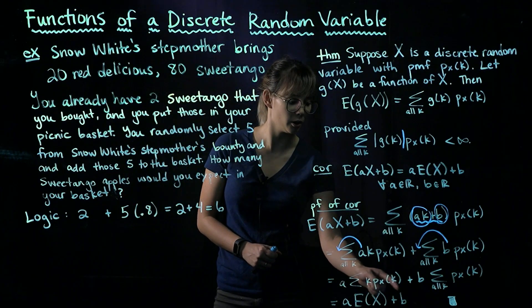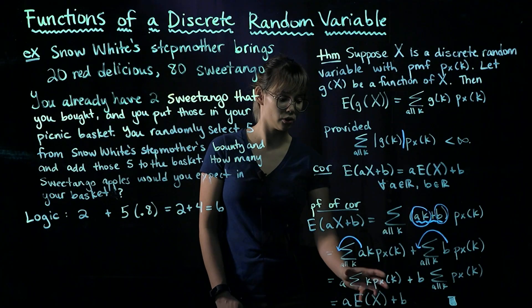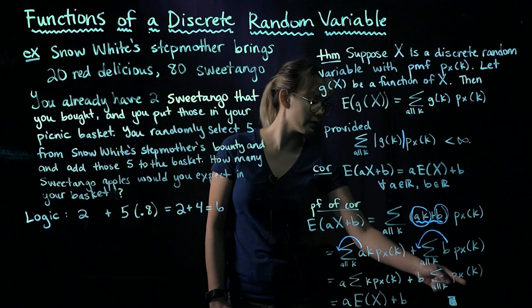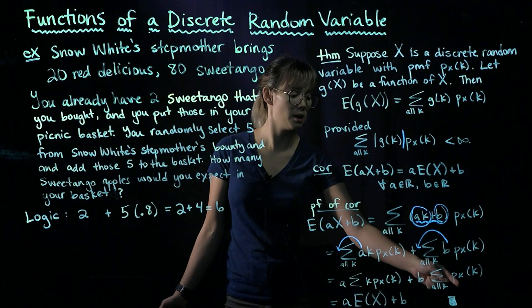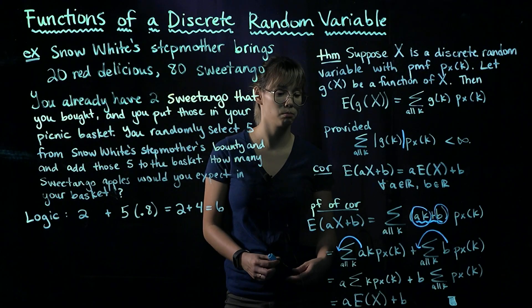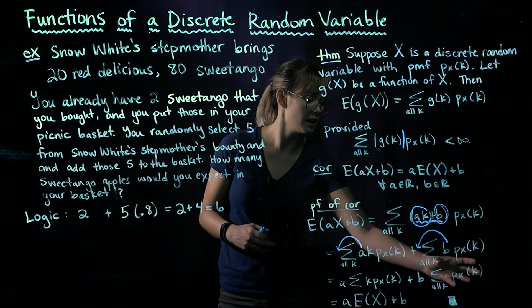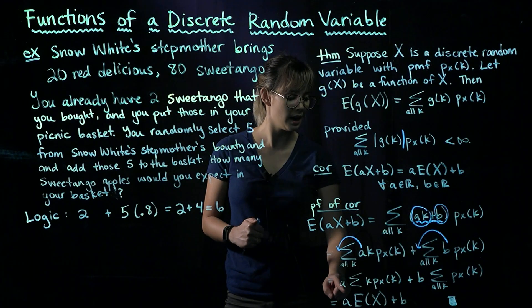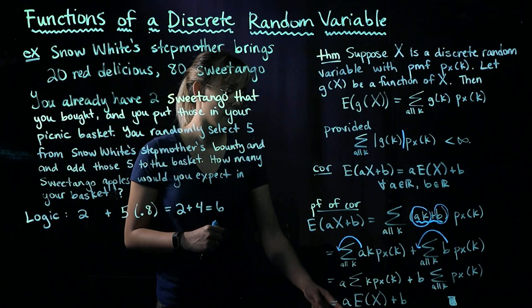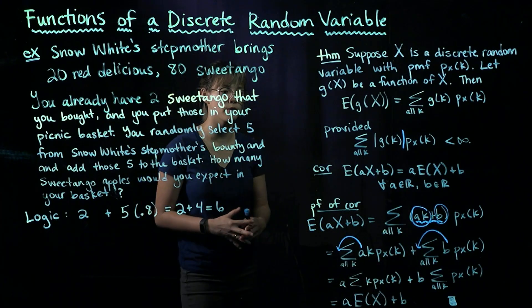Now if we look at this first sum here, we recognize this as the expected value of X. So that's great, we're done with this first piece. And now when we look at the second piece, we recognize, oh, we're just summing over a PMF for all the values of k. And of course, PMFs when summed over have to equal one. So this sum is equal to one. So we have a times the expected value of X plus b times one, or in other words, a times the expected value of X plus b. So we've proven that our corollary is true.